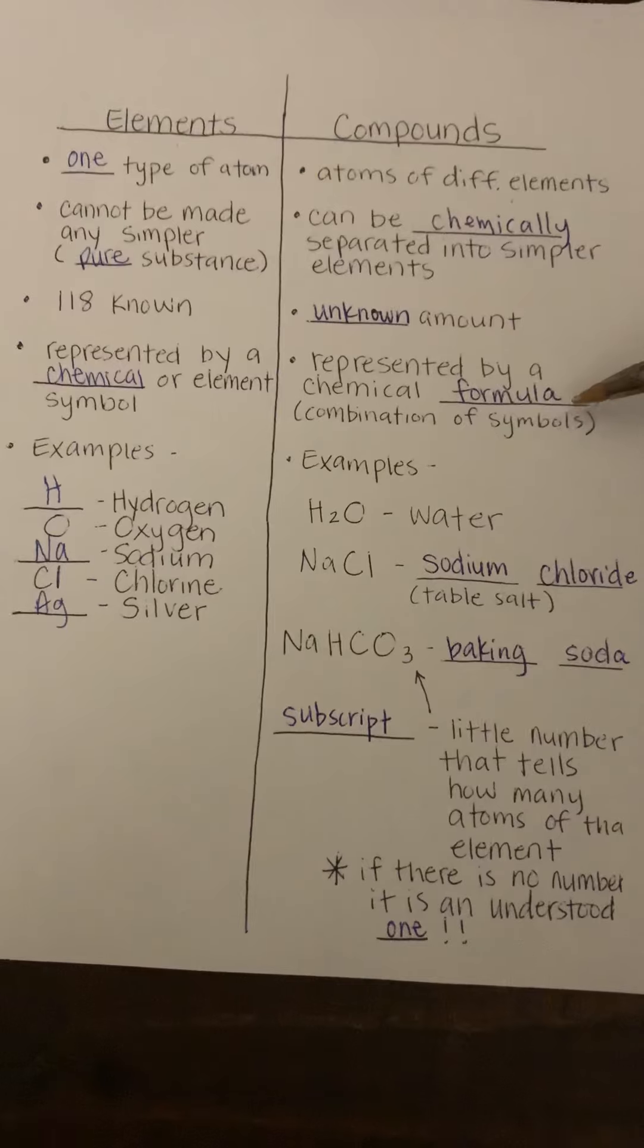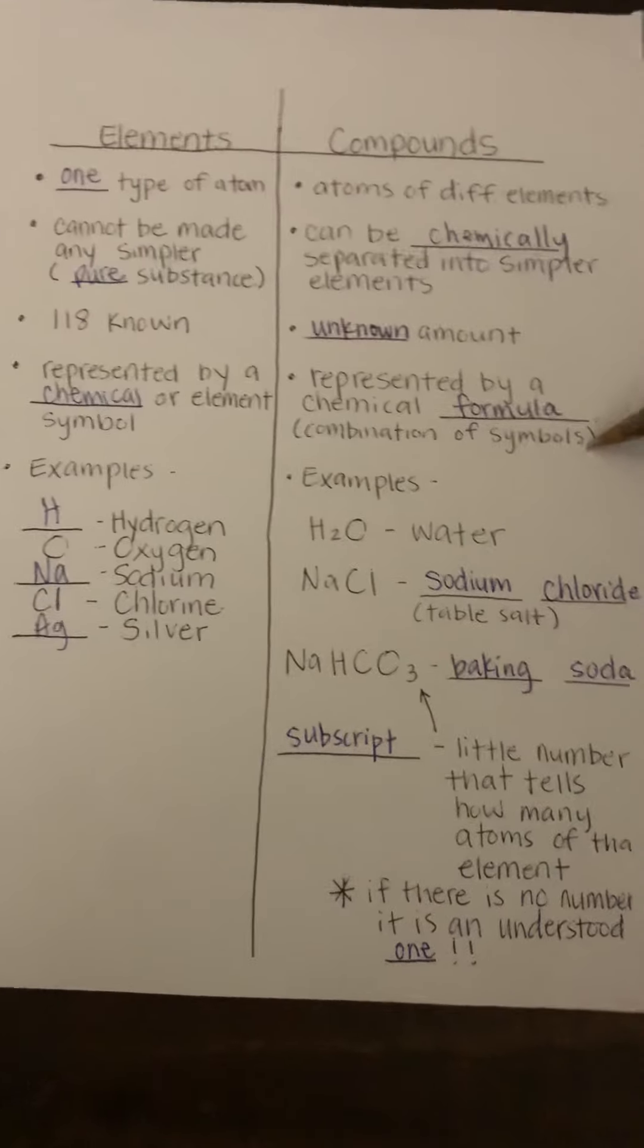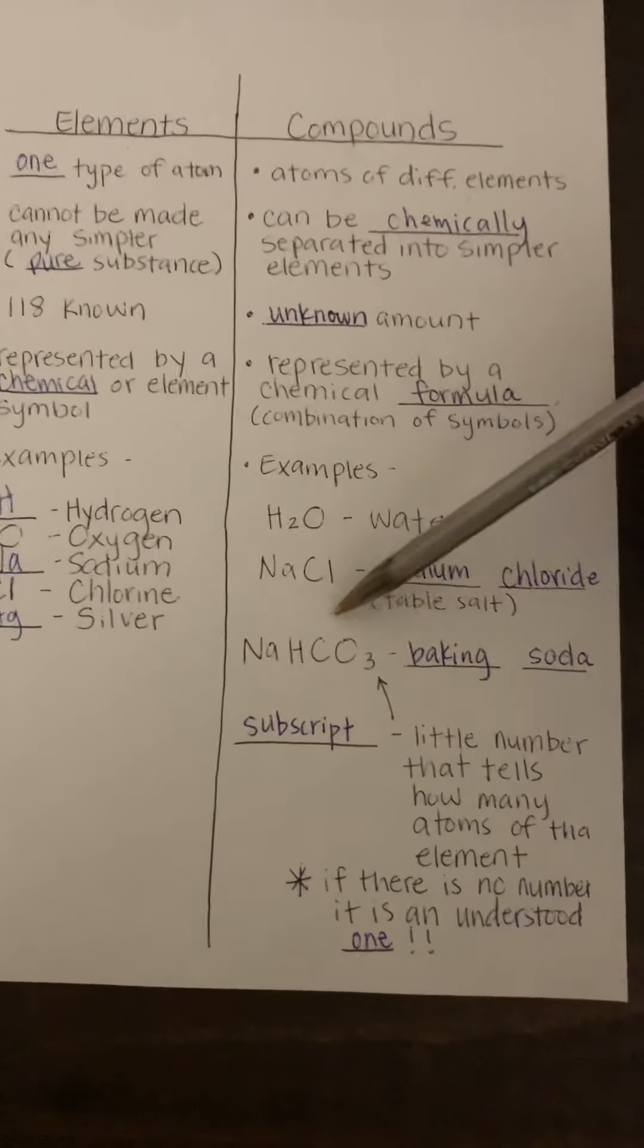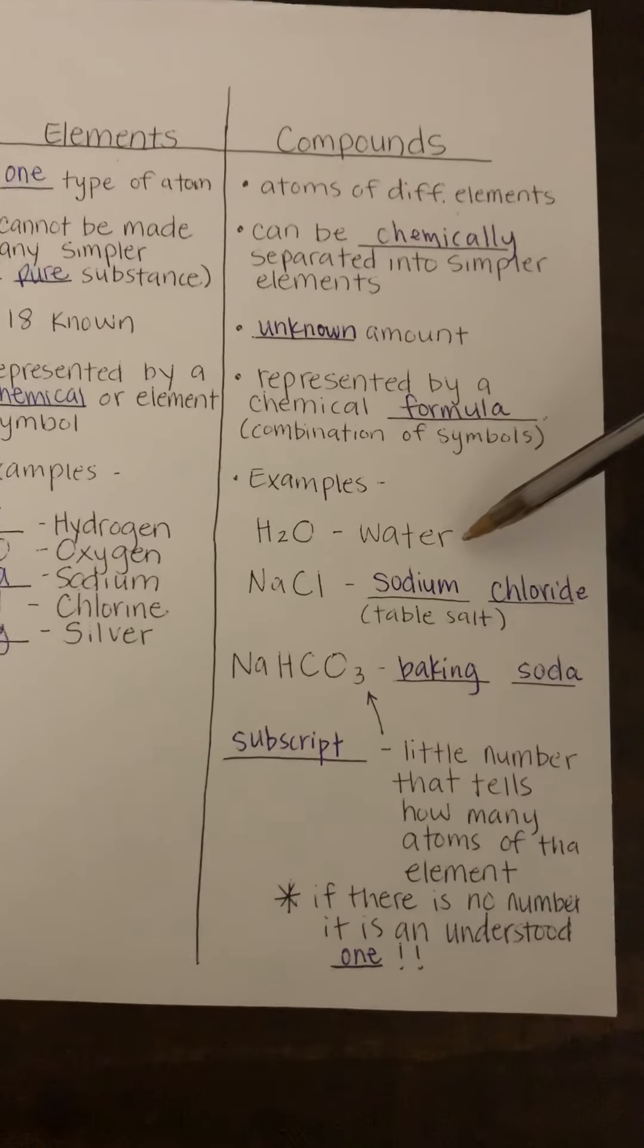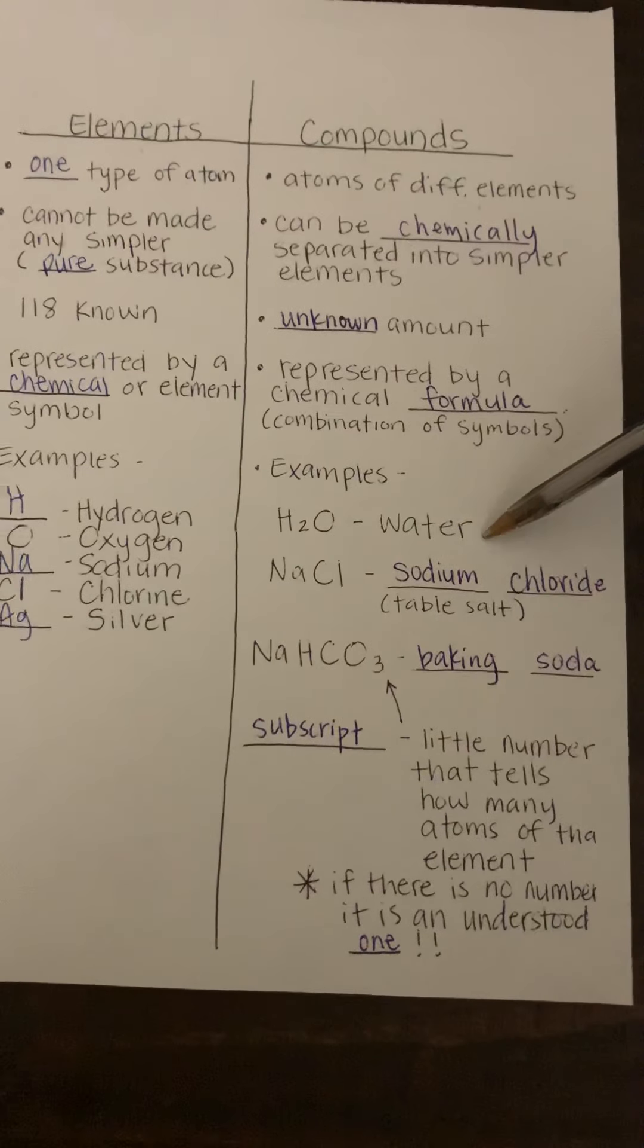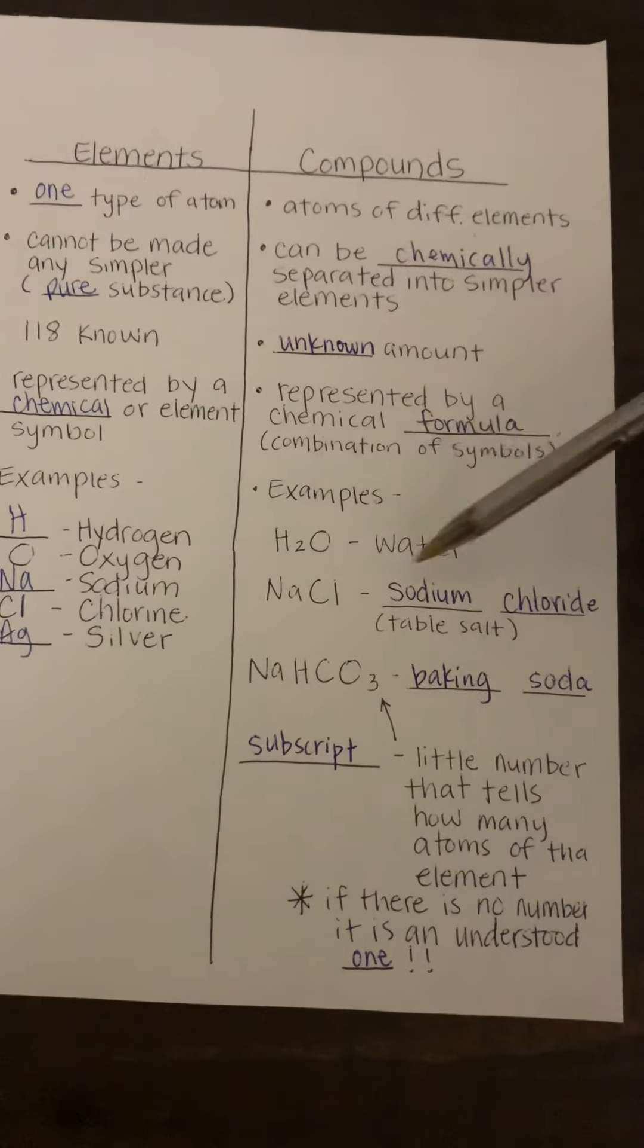All right, the way we write compounds is by what's called a chemical formula, which just means a combination of symbols. So now let's get into some of the ways we will see compounds written. So one common compound that you might have known is H2O. We now know that H is hydrogen and O is oxygen. This is water.